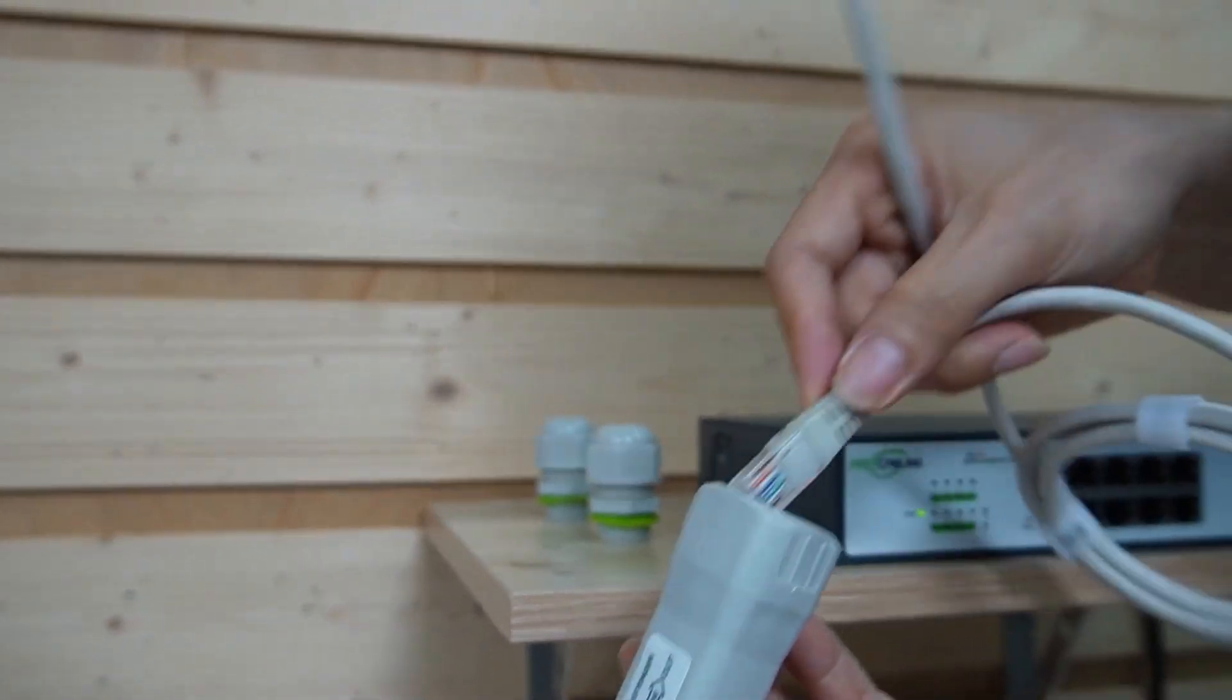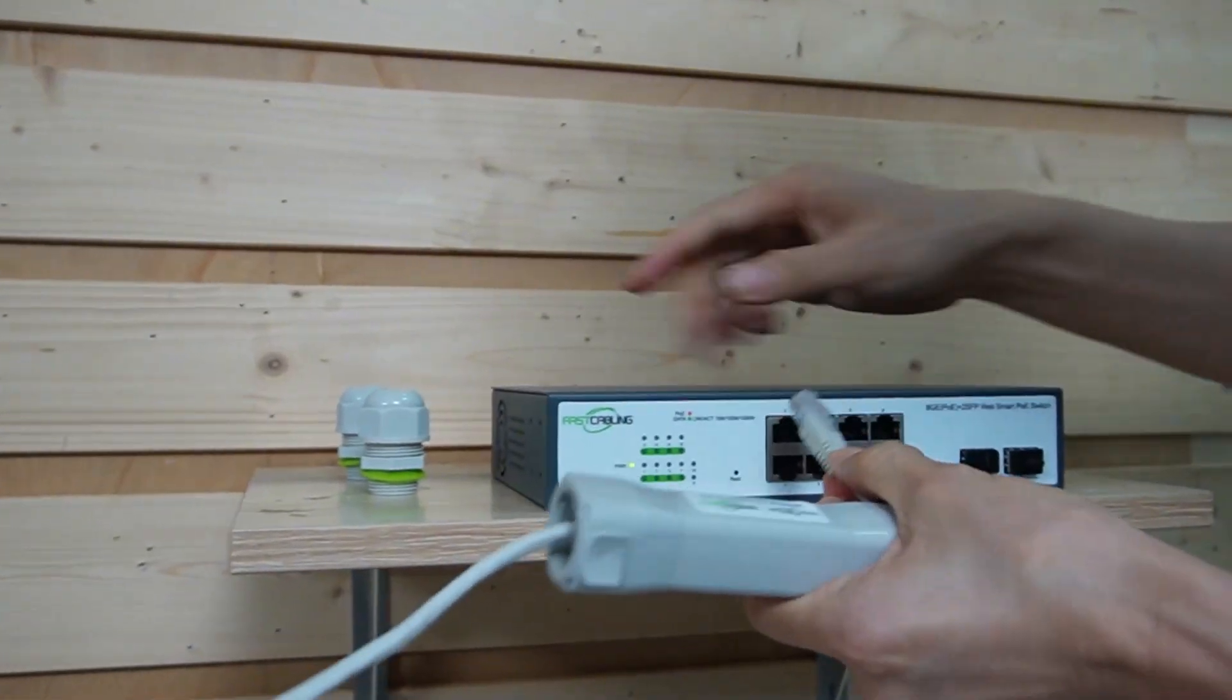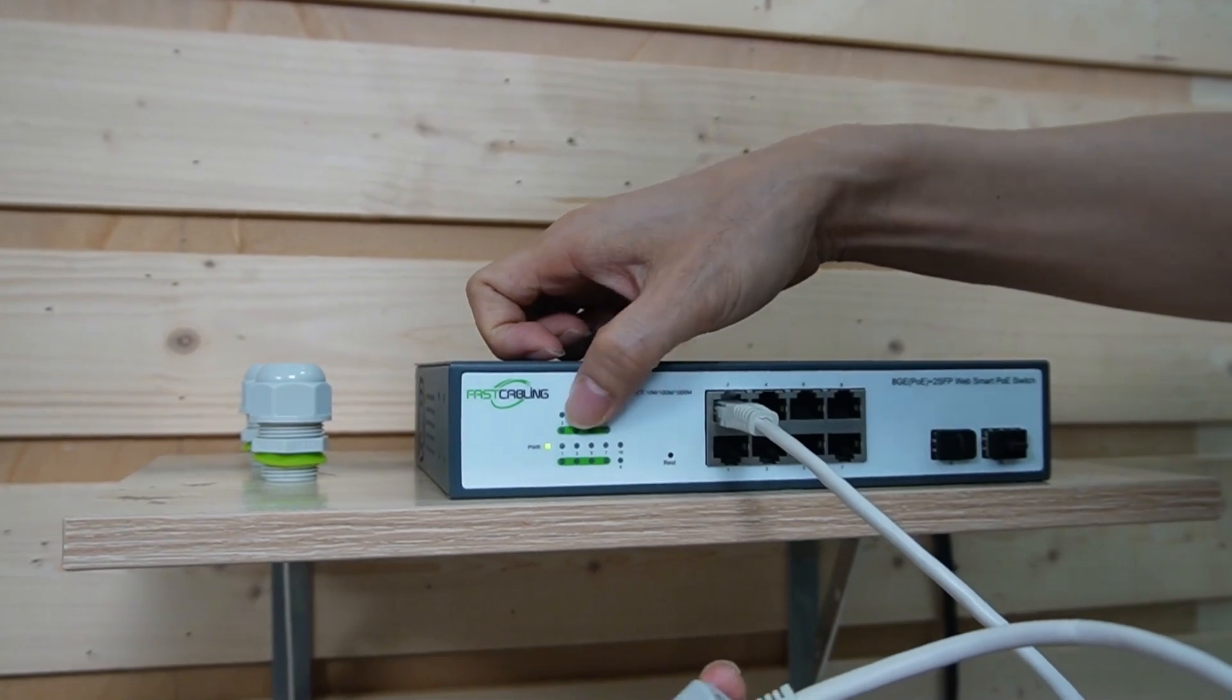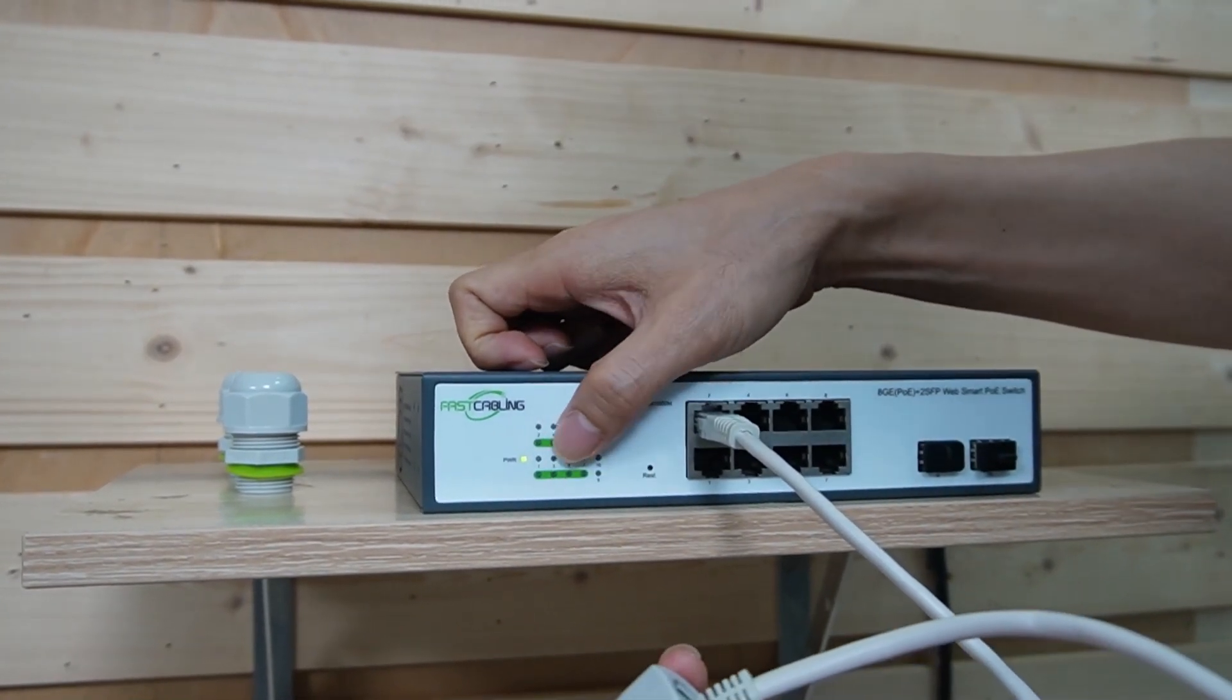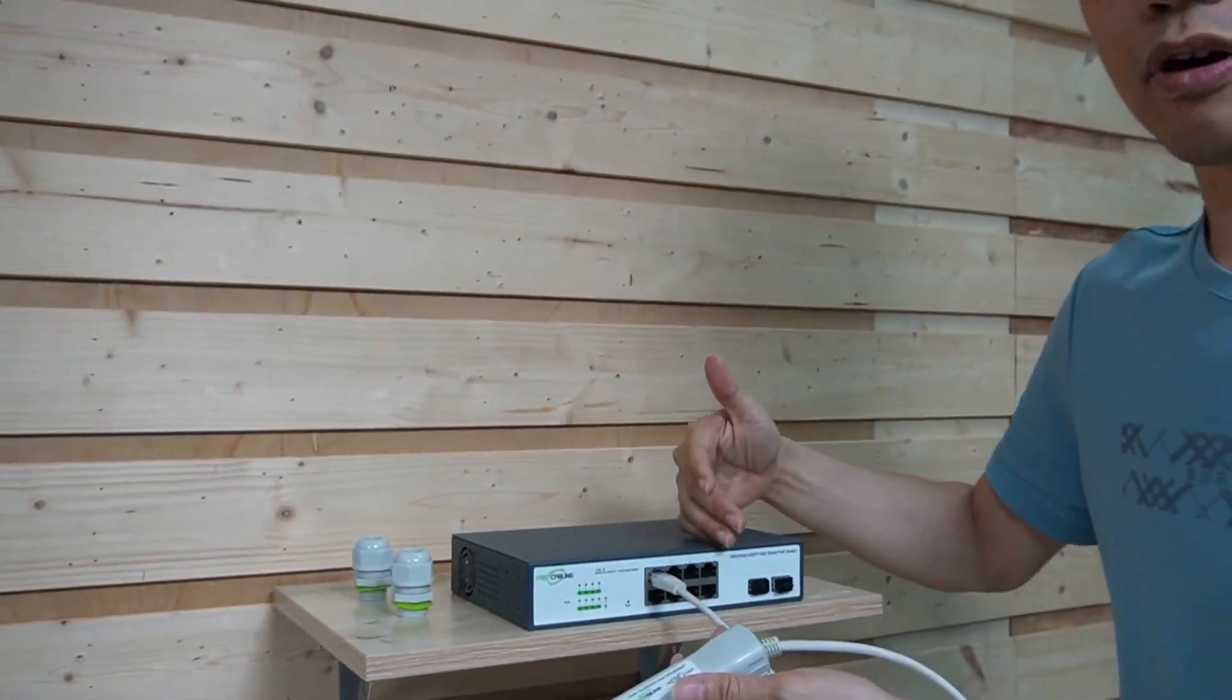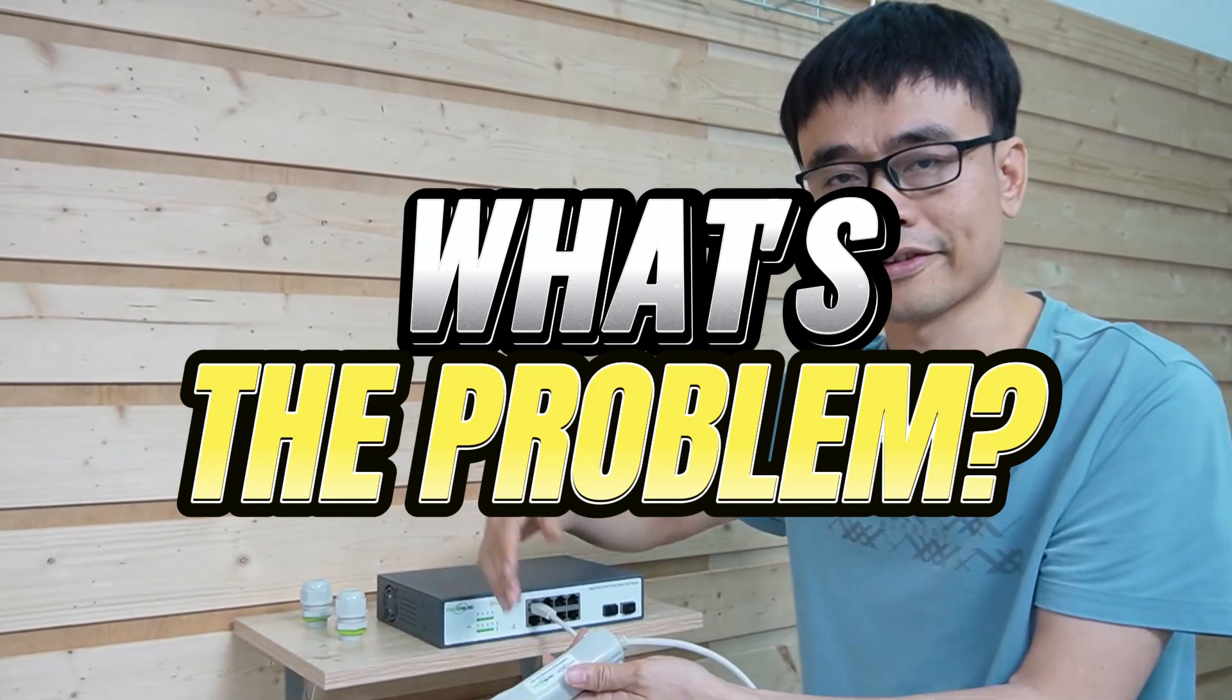Let's connect the output port to our second POE switch. There's no indicator on, the indicator is off, which means there's no internet access from this barn to the house. What is the problem?